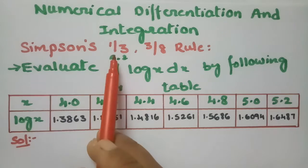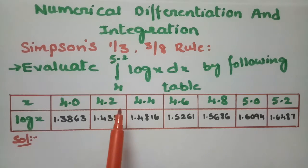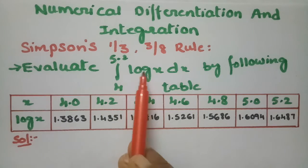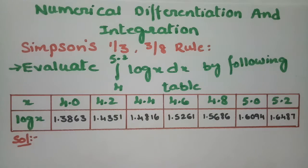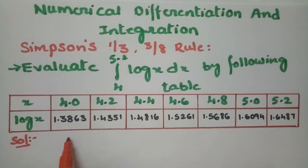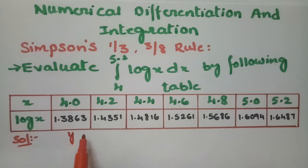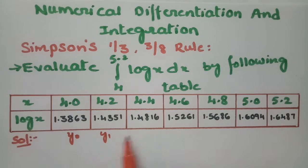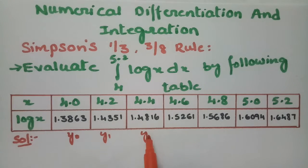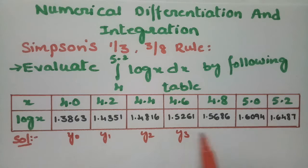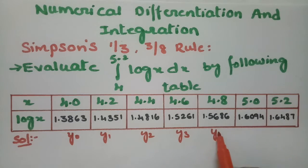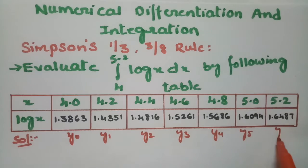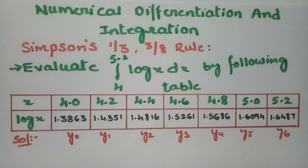We have to use Simpson's 1/3rd rule for solving this integral. First of all, I have to label the ordinates as y0, y1, y2, y3, y4, y5, and y6.